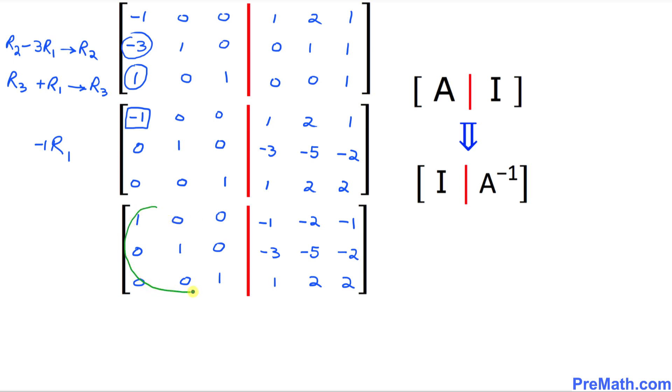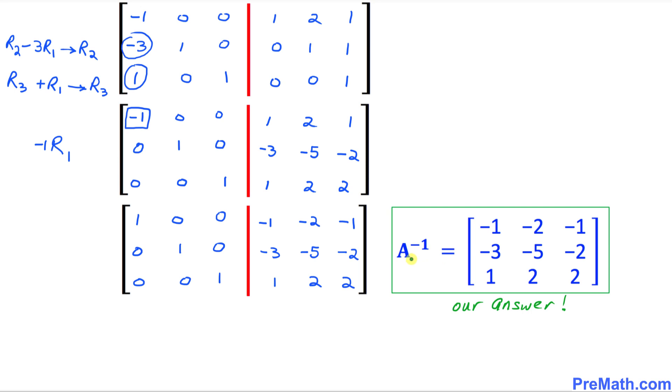Now as you can see our left hand side matrix has been transformed into an identity matrix so then this right hand side matrix will automatically be the inverse matrix according to our given rule. Thus A inverse is our inverse matrix and that is our answer.